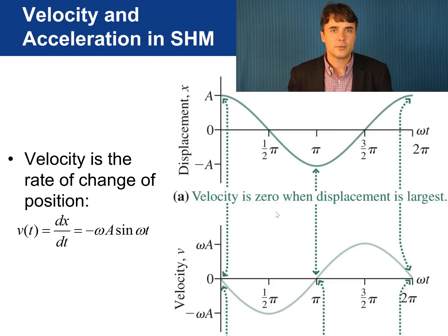So, setting phi equals zero again for simplicity, we can graph the velocity versus time of simple harmonic motion, or SHM. The velocity is the slope of the position versus time graph. So, it starts at zero for t equals zero. You can also see that from the equation, since sine of zero is zero.